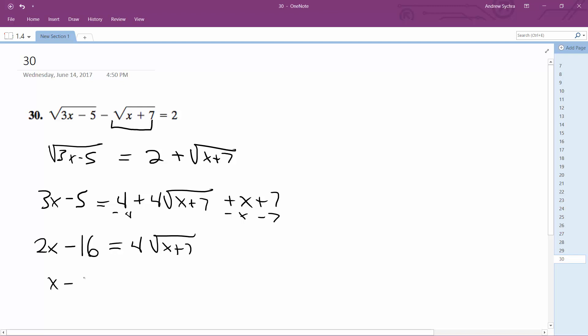We can divide through by 2, so we get x minus 8 is equal to 2 root x plus 7. And then square both sides again, so we get x squared minus 16x plus 64 is equal to 4 times x plus 7.